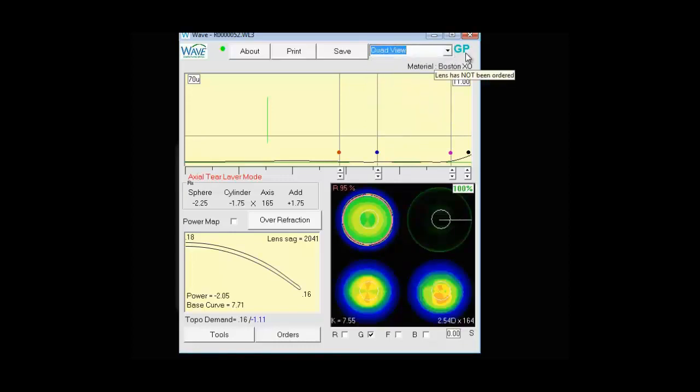To the right of that, you'll see the GP logo. If you hover over that, it will let you know if this lens has been ordered or not. And if it had been ordered, on what date it was ordered. And directly under that is the material that the lens is currently in.